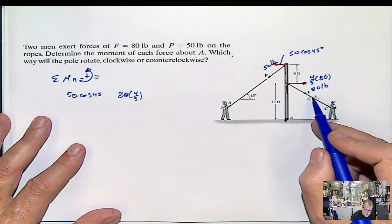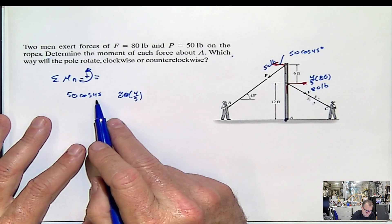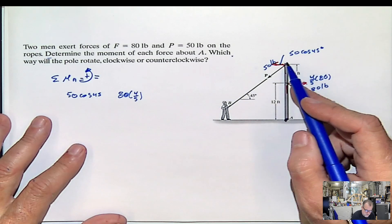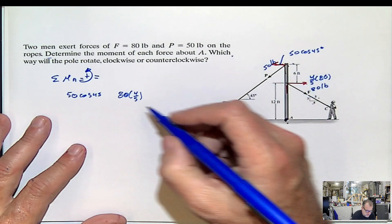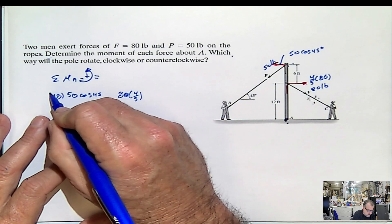Ah, we didn't put the distance here. So 50 cosine 45 multiplied by this. The force is horizontal. The total distance is 18. I'm going to put it here. Sorry about that.